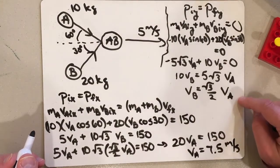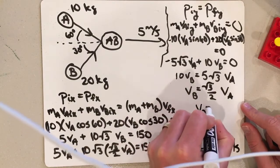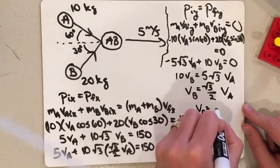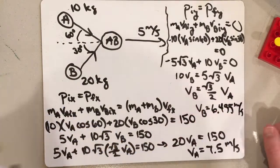Take that, plug it up here, and you get that VB equals approximately 6.495 meters per second.